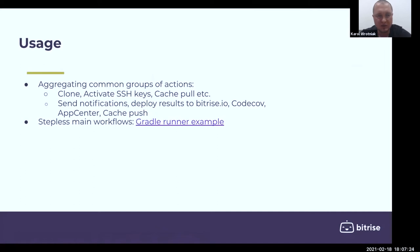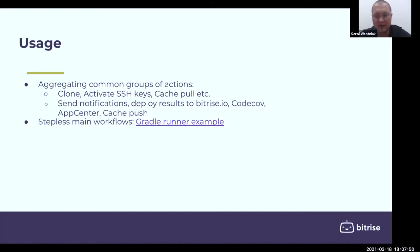What can utility workflows be used for? Basically, for aggregating common groups of steps, like git cloning, activating SSH key for git connection, and pulling the cache. This group is executed before the actual build, before the main steps. They can also be used at the end — for example, for sending notifications to Slack, Teams, or email. They can deploy results to Bitrise.io and other services like App Center or Play Store, and can also be used for cache pushing.